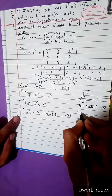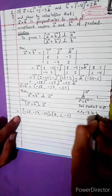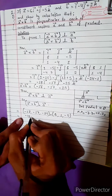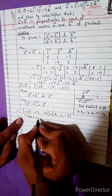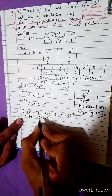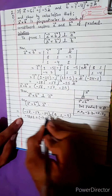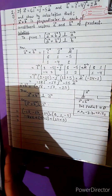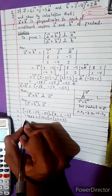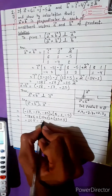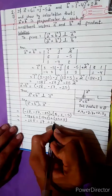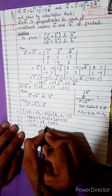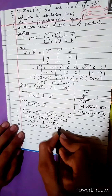Using the dot product formula x1·x2 + y1·y2 + z1·z2: dot product equals (-18) into 6, plus (-17) into 1, plus 25 into 5. This gives minus 108, minus 17, plus 125. Equals minus 125, plus 125. Dot product equals 0.